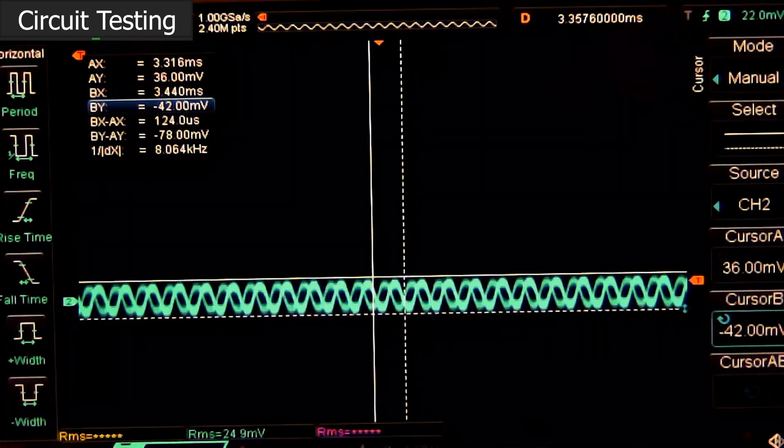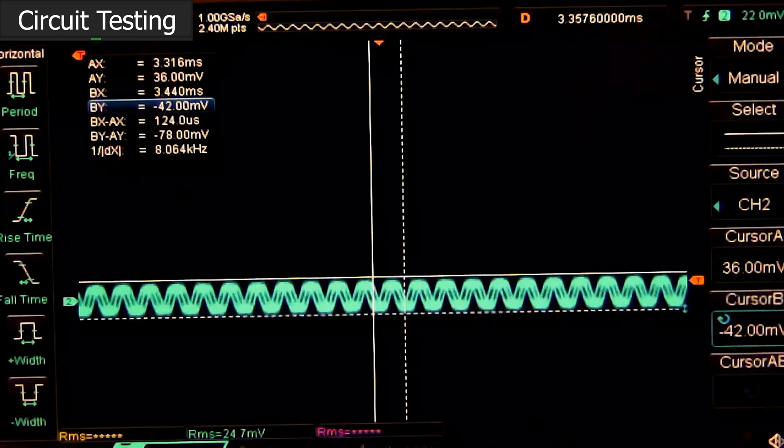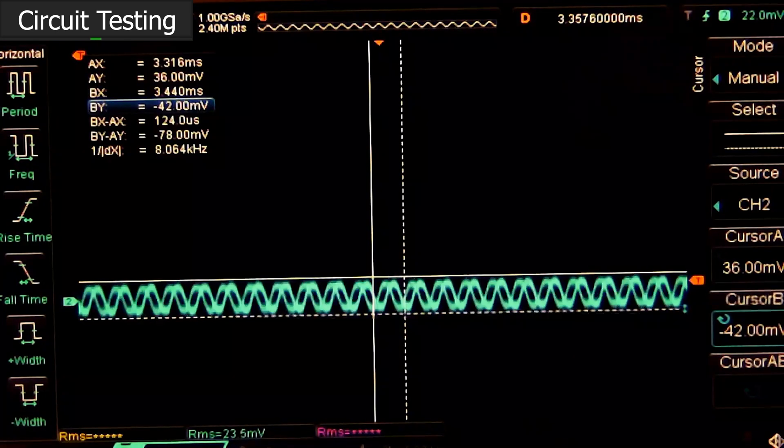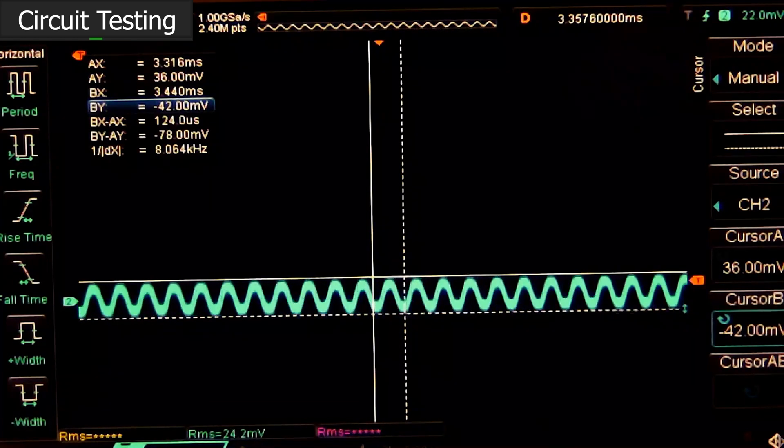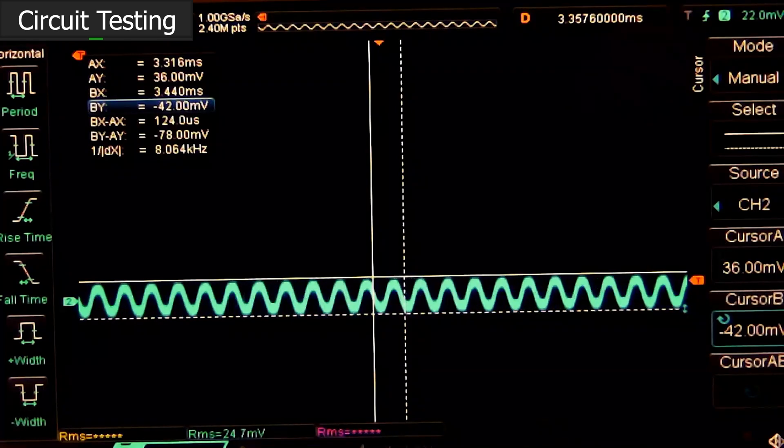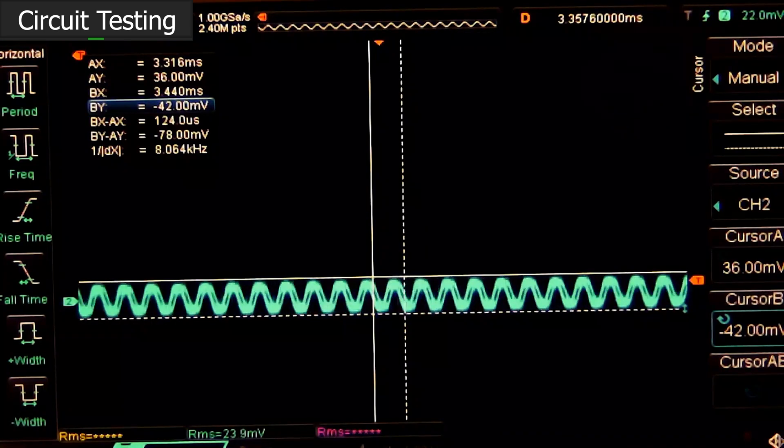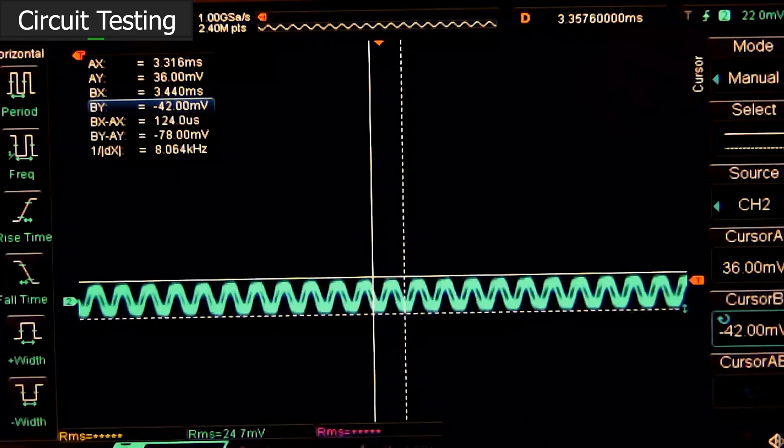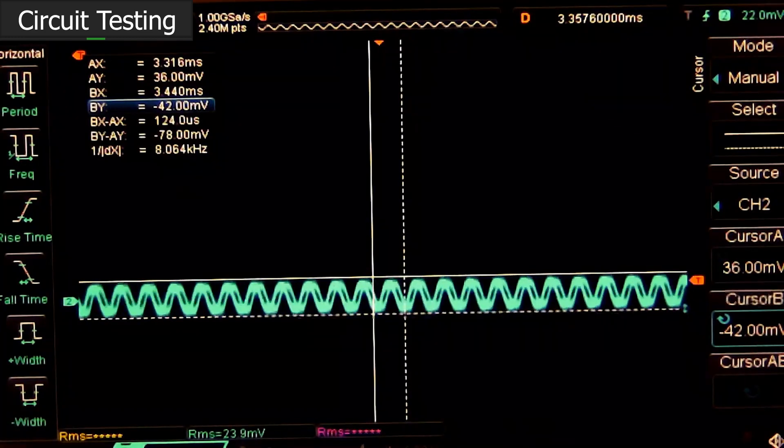The 2.2 microfarad capacitive load was causing the internal buffer op amp to become unstable. Not what I would call ideal. This instability led to what we measured to be a ripple of about 100 millivolts on top of that 4.096 volt reference. That's a pretty big deal. That's like 2.5% instantaneous error, even if the DC steady state accuracy was dead on.